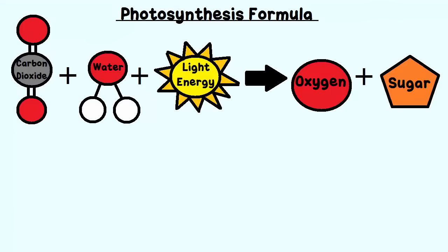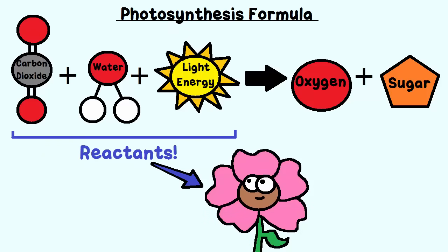Here is the formula for photosynthesis. On the left side of the formula, you will find the reactants. That means these are the inputs. The plant has to have these in order to do photosynthesis. On the right side of the formula, you will see the products. That means those are the items that are produced by the plant, the outputs.